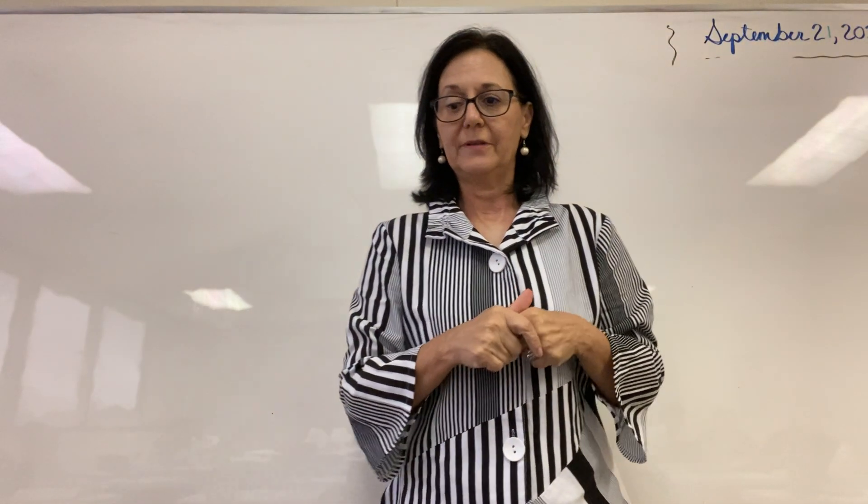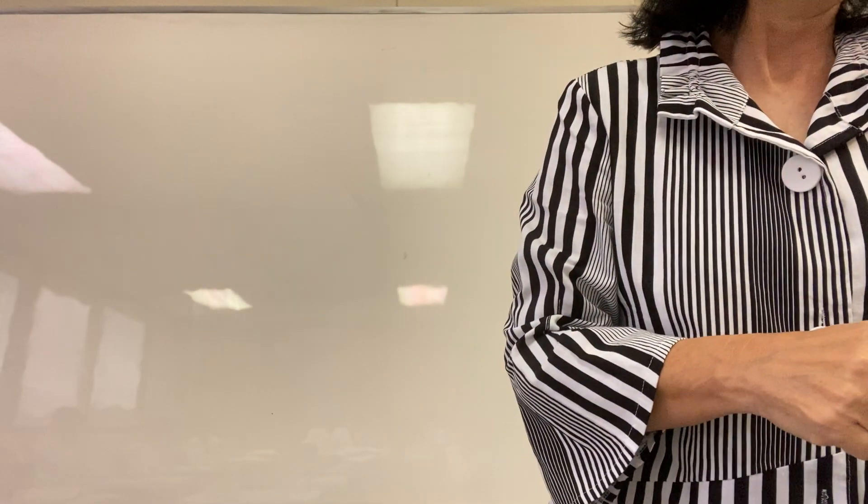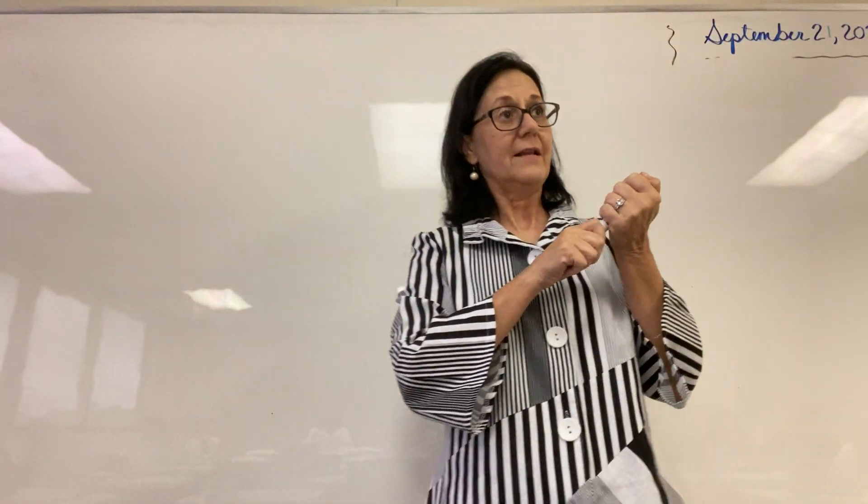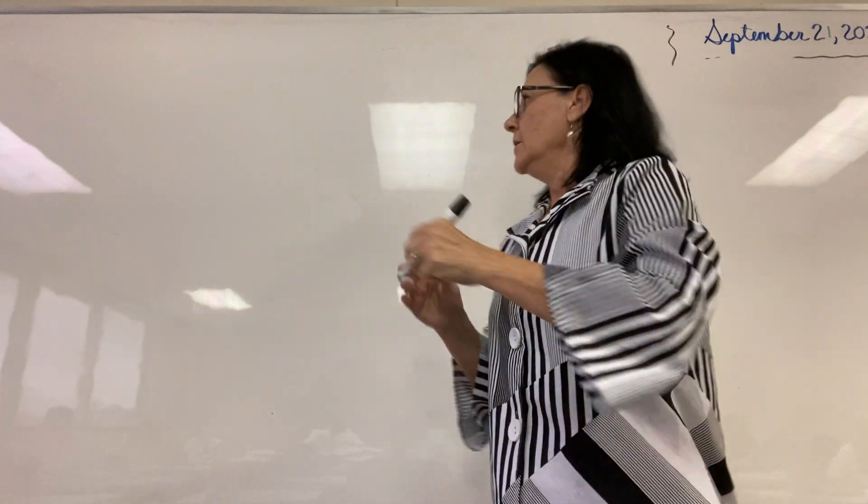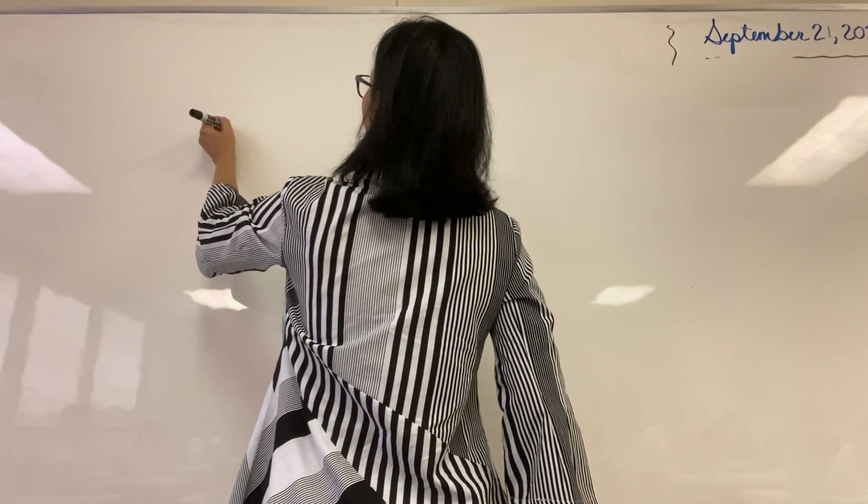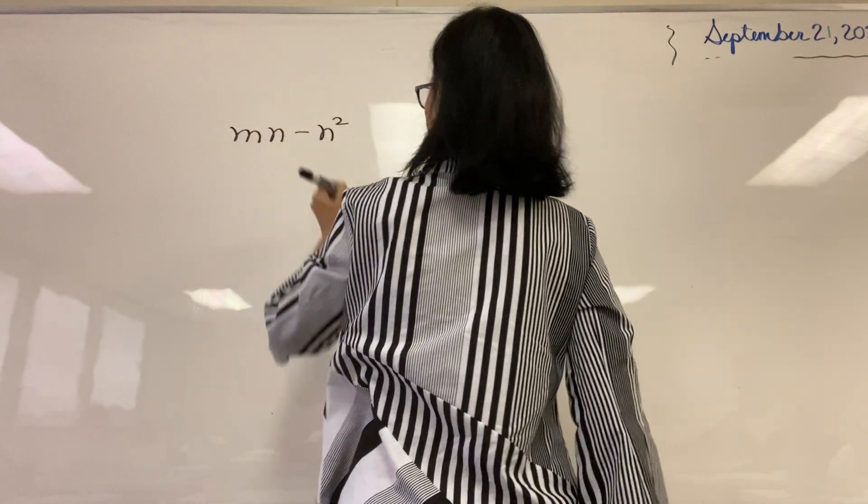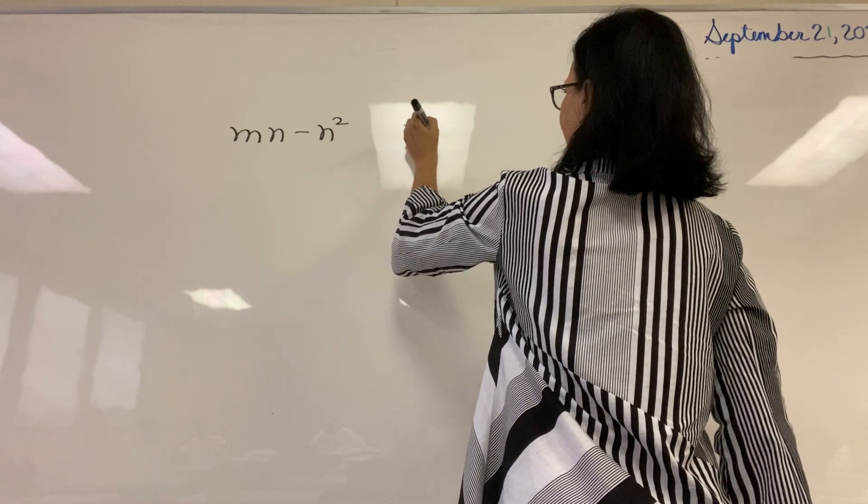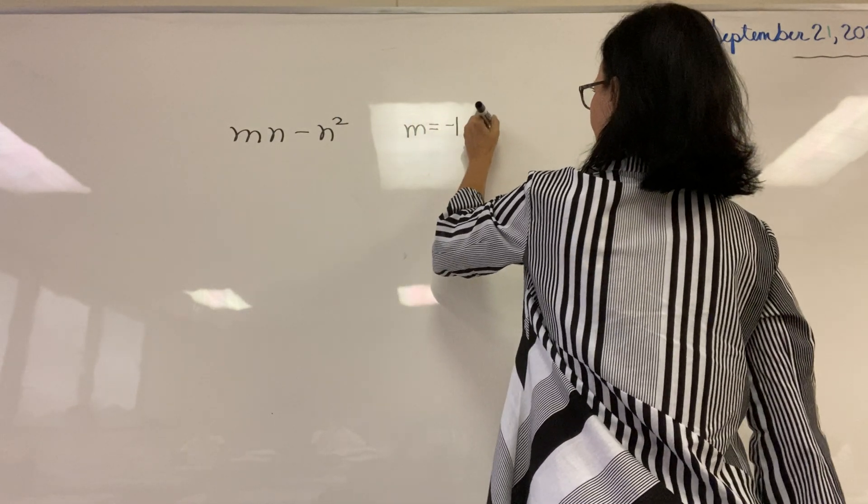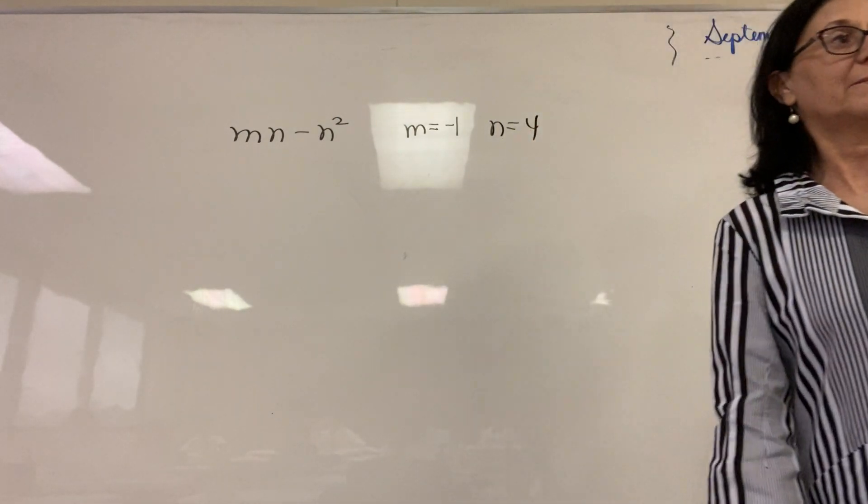This is Algebra 2, Lesson 13 on page 71. This lesson is on substitution. So thus far, we have had problems such as this, where we decided the value of m is negative 1, the value of n is, say, 4. I just made up numbers, right?